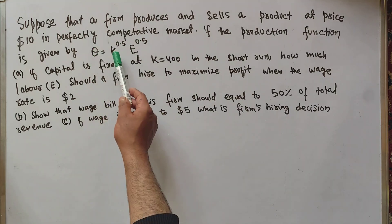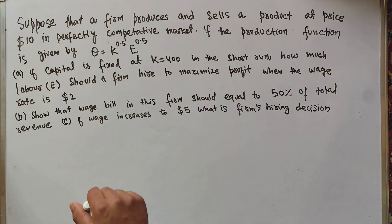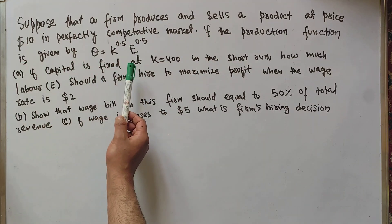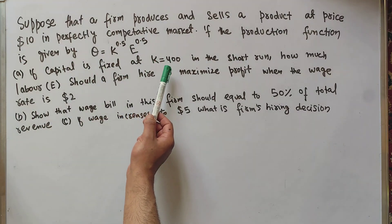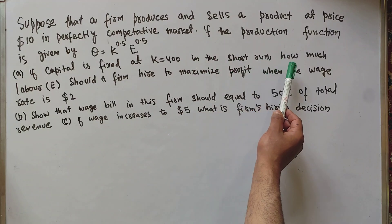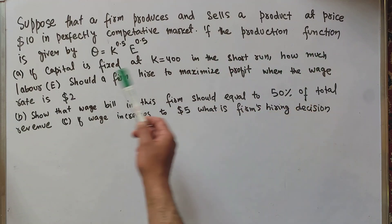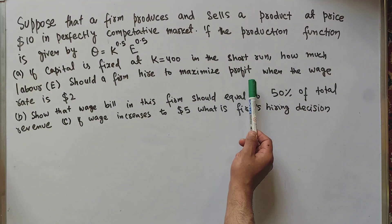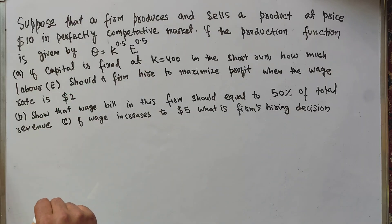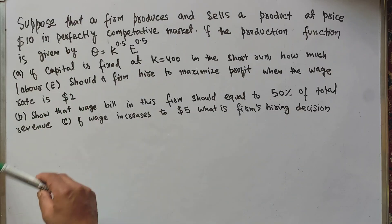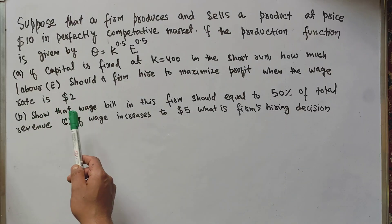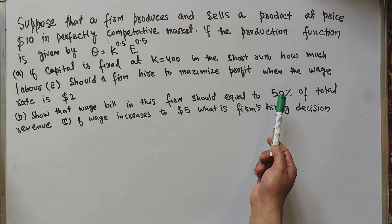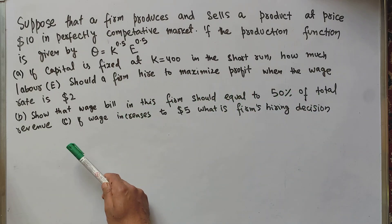where K denotes units of capital and E denotes units of labor. Capital is fixed at K = 400 in the short run. We need to find out how much labor the firm should hire to maximize profit when the wage rate is $2. We also have to show that the wage bill should equal 50% of the total revenue.